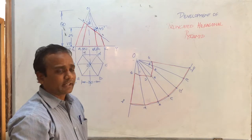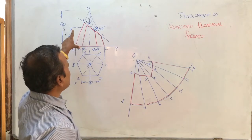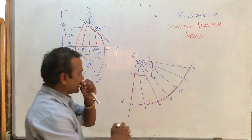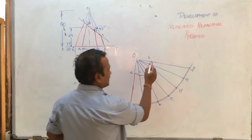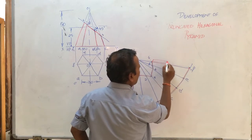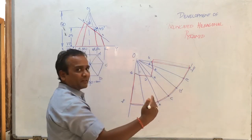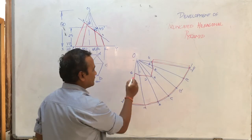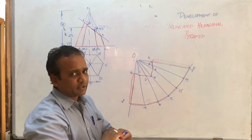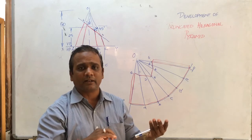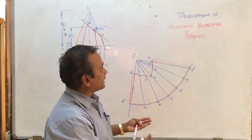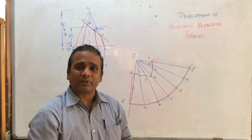Join the straight edges from O-A to B, C, D, E, and F to complete the development of the hexagonal truncated pyramid cut at 25mm with a 45-degree angle. To create a lap joint, allow approximately 5mm on each side — around 10mm total — divided as 5mm and 5mm. The pieces are then assembled in a sheet metal workshop using a mallet. The final result is the development of a truncated hexagonal pyramid.